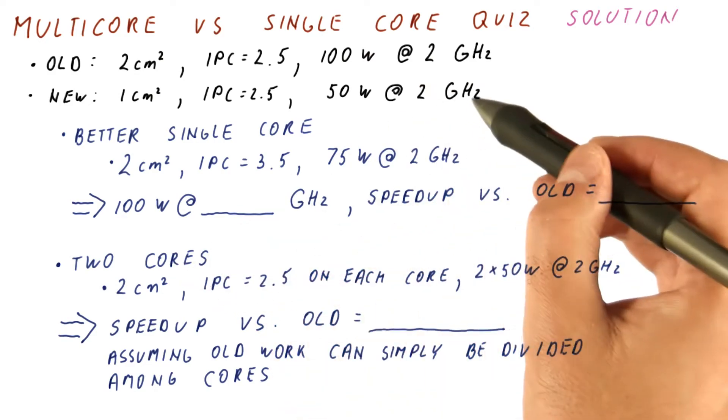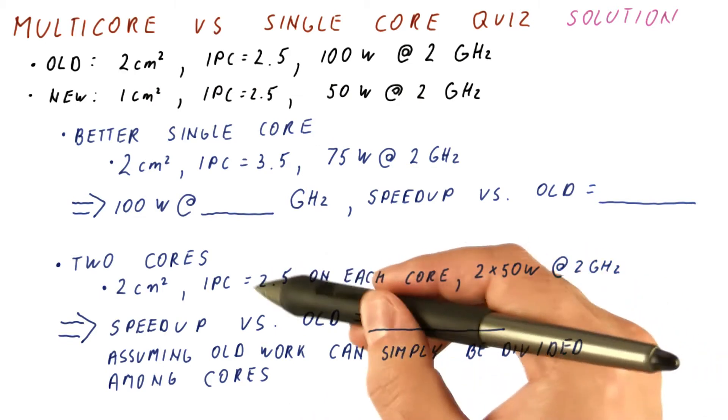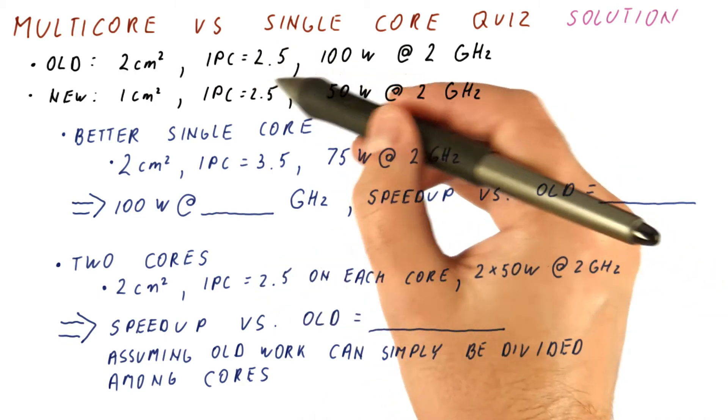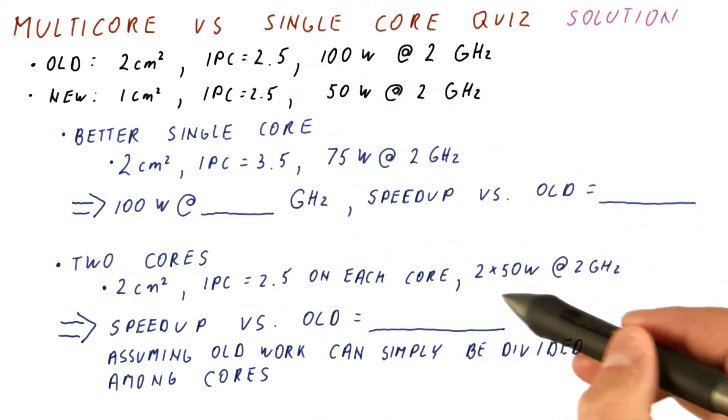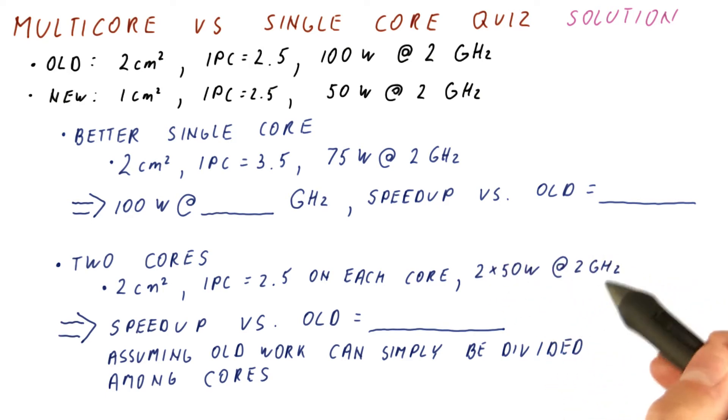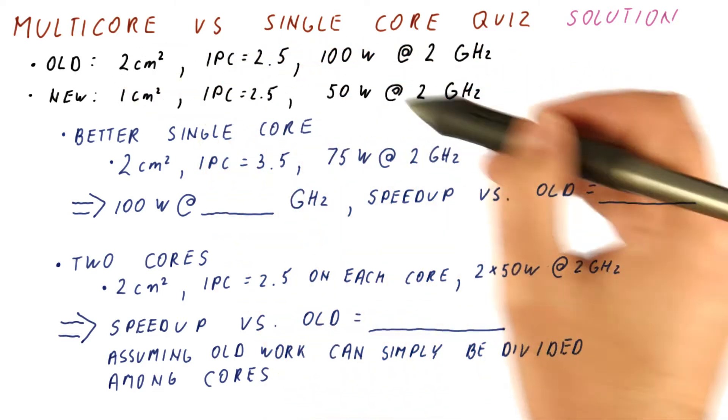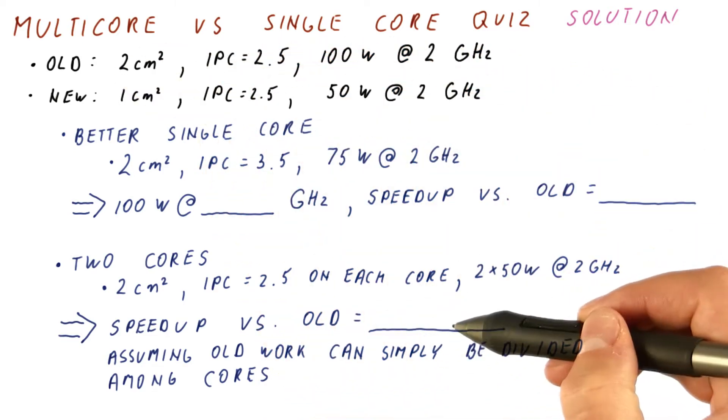The other option was just put the two cores that we can now fit on the chip. Each now gets us the same IPC as the single core did, and together they consume the whole power budget of the chip at 2 gigahertz. So the question is, what's the speedup versus the old technology with the two core approach?